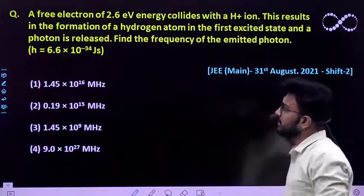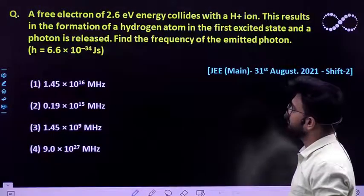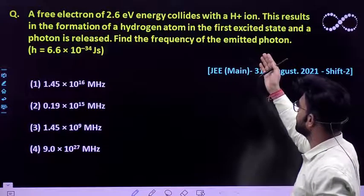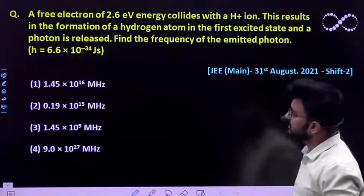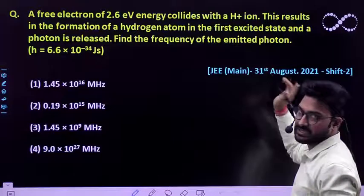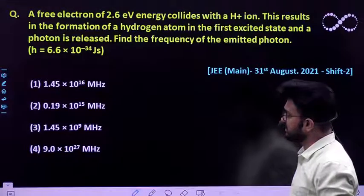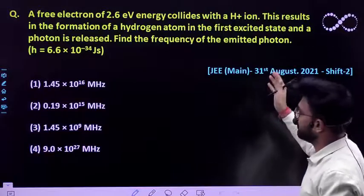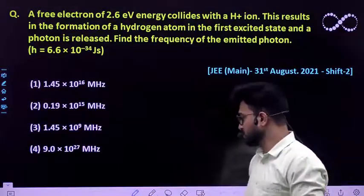The question says: a free electron of 2.6 electron volt energy collides with a hydrogen plus ion. This results in the formation of a hydrogen atom in the first excited state and a photon is released. Find out the frequency of the emitted photon. The value of Planck's constant is also given.